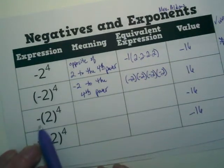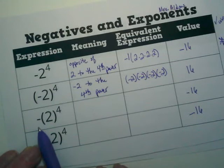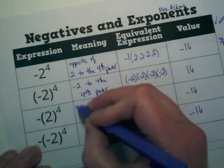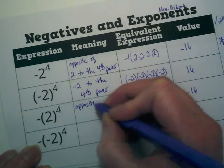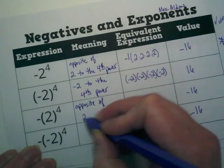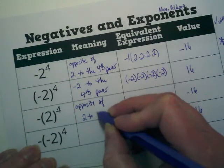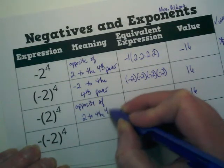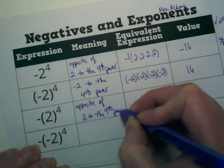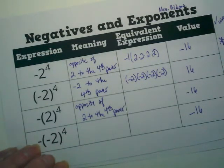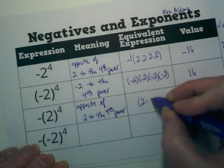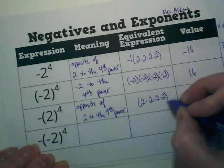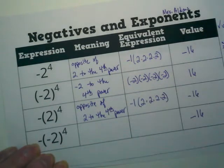Where's the negative on this one? It's outside of the parentheses, and so because it's outside, we start off with our meaning as being opposite of 2 to the fourth power. This one is just like the first one. 2 is inside the parentheses being multiplied 4 times, and that negative 1 is out front just waiting for the parentheses to be finished.